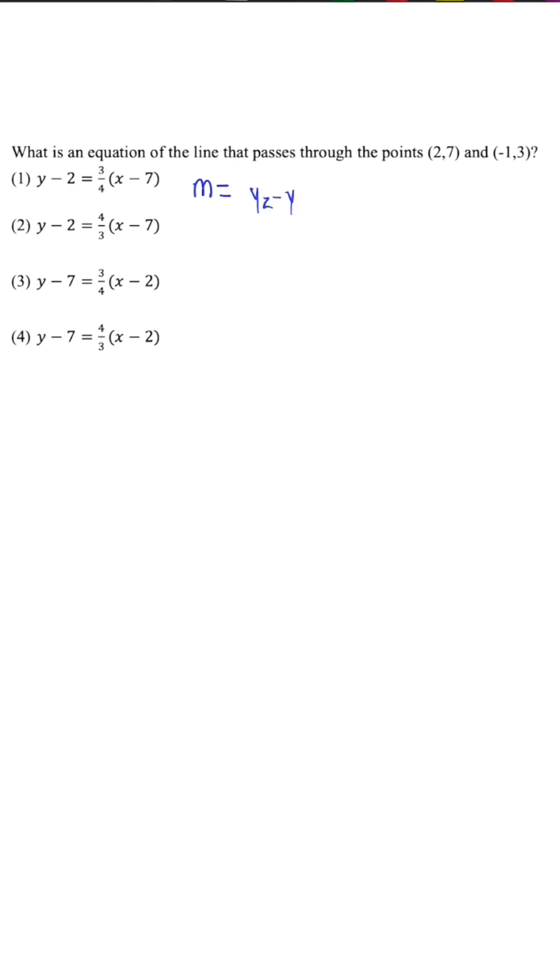The slope, which we can use the formula y2 minus y1 divided by x2 minus x1. And we need to know the point slope formula, which is y minus y1 is equal to m times x minus x1.